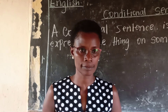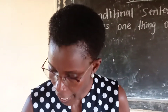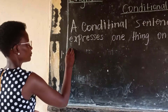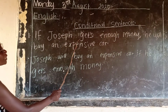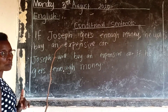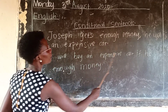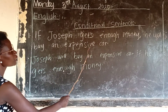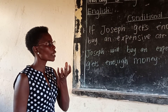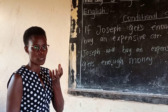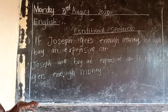For example, here is a sentence in 'if one': 'If Joseph gets enough money, he will buy an expensive car.' Notice that comma after the if-clause. If you begin with 'if,' you must put a comma in the middle of the sentence. But if 'if' is placed in the middle of the sentence, there is no need for a comma.